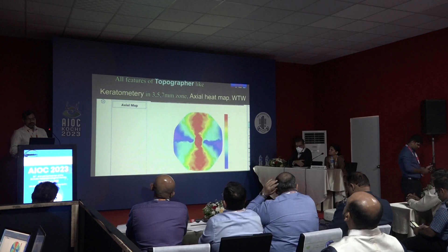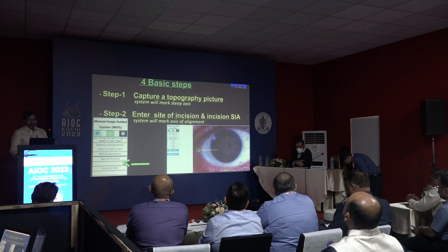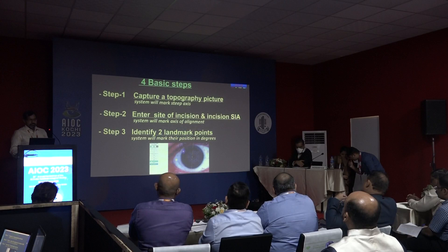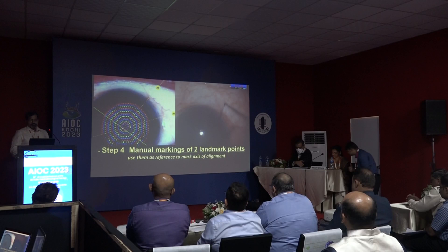There are 4 basic steps. Step 1: Capture topography picture — the system automatically marks the steep axis. Step 2: Enter site of incision and incision SIA — the system automatically marks the axis of alignment. Step 3: Identify and mark 2 landmark points — the system will mark their position in degrees. Step 4: Manually mark 2 landmark points on the patient's eye and use them as reference to mark the axis of alignment.